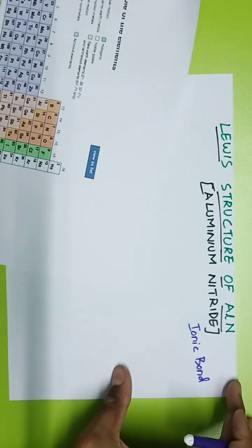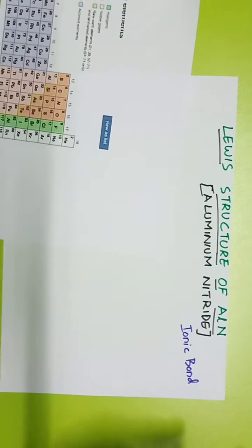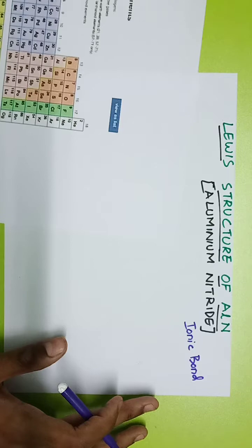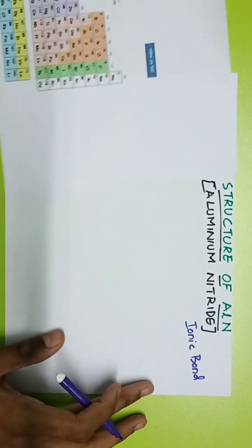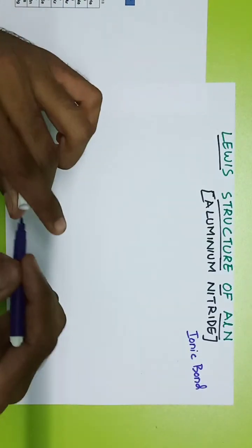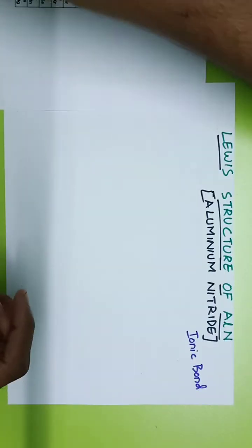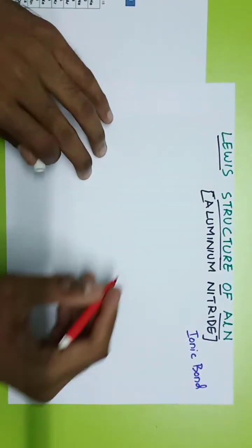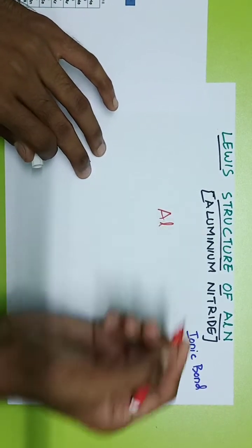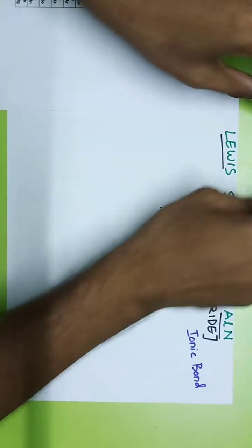This is an ionic bond because one element has to lose electrons and the other has to gain electrons. That is why one becomes positive and the other becomes negative. Let's draw aluminum in red and nitrogen in another color to see how this happens.